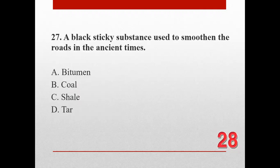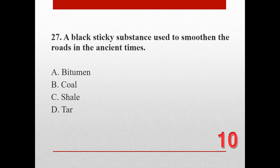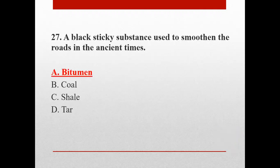Number twenty-seven. A black stick substance used to smoothen the roads in ancient times. A. Bitumen, B. Coal, C. Shale, and D. Tar. The correct answer is A. Bitumen.